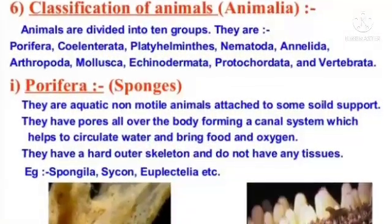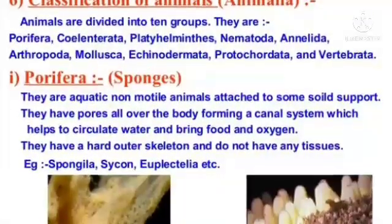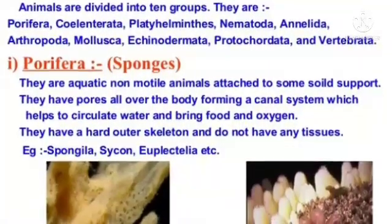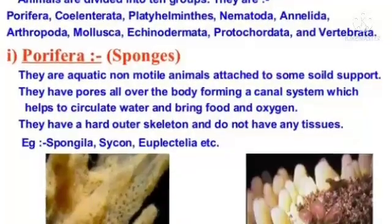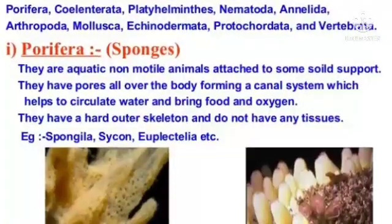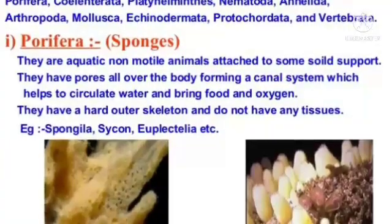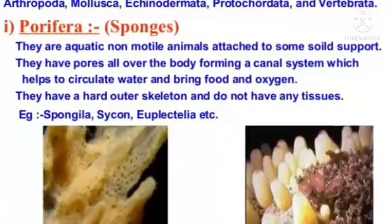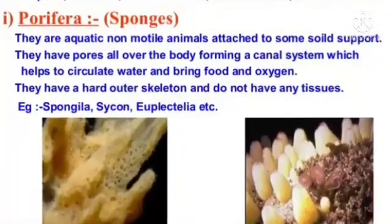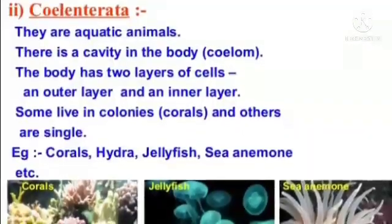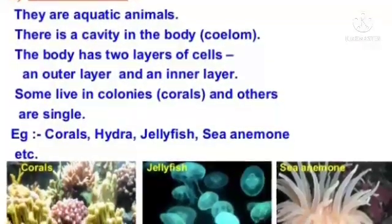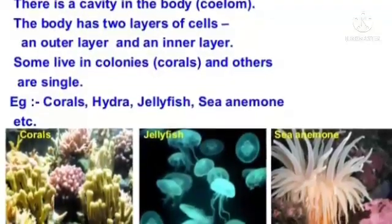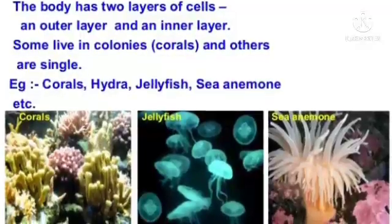Classification of Animals. Animals are divided into ten groups. Porifera: they are aquatic, non-motile animals attached to some solid support. They have pores all over the body forming a canal system which helps to circulate water and bring food and oxygen. They have a hard outer skeleton and do not have any tissues. Examples: Spongilla, Sycon, Euplectella, etc. Coelenterata: they are aquatic animals. There is a cavity in the body called the coelum. The body has two layers of cells — an outer layer and an inner layer. Some live in colonies and others are solitary. Examples: corals, hydra, jellyfish, sea anemone, etc.